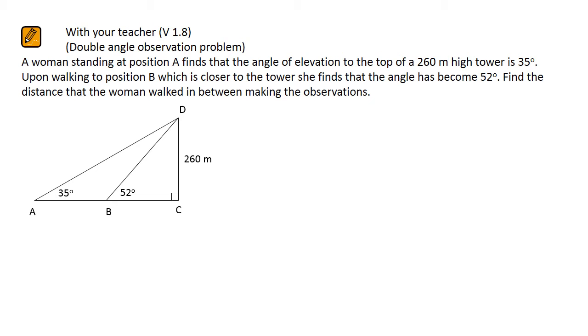First of all, we notice that the distance AB that's required isn't even in a right-angled triangle. Now the trig we've been doing so far deals with right-angled triangles. So what we're going to have to do is look at other triangles in order to try and find out distance AB.